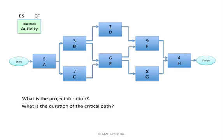I begin with activity A. The earliest activity A may begin — since activity A is the first activity, the earliest it may start is day 1. If it runs 5 days, day 1, 2, 3, 4, the earliest it may finish is day 5. Activity B may begin the day after activity A ends. Therefore, B may begin on day 6.